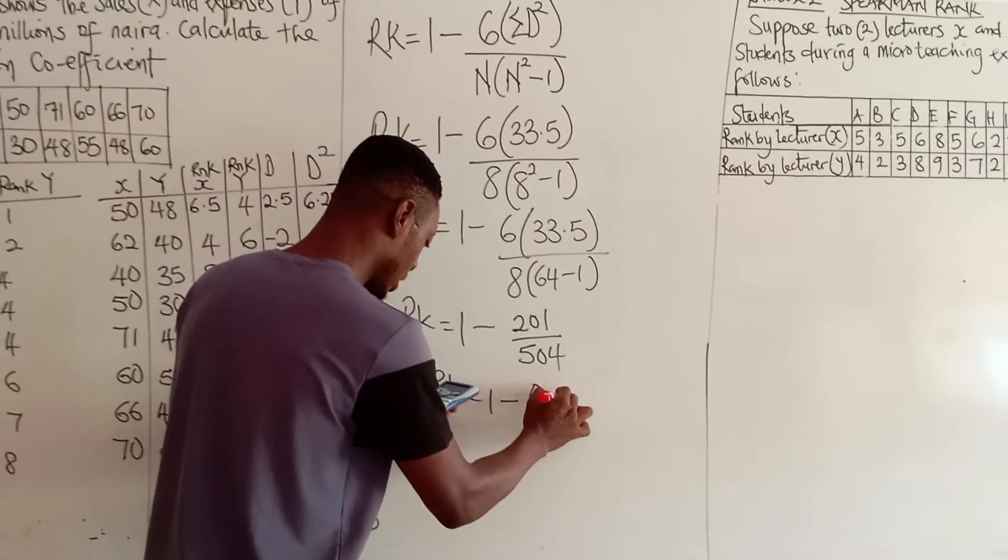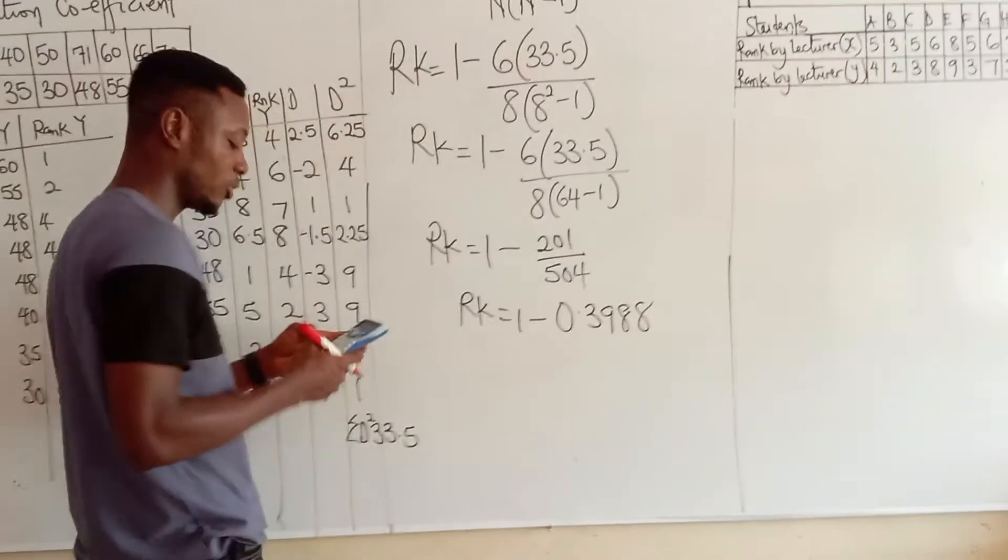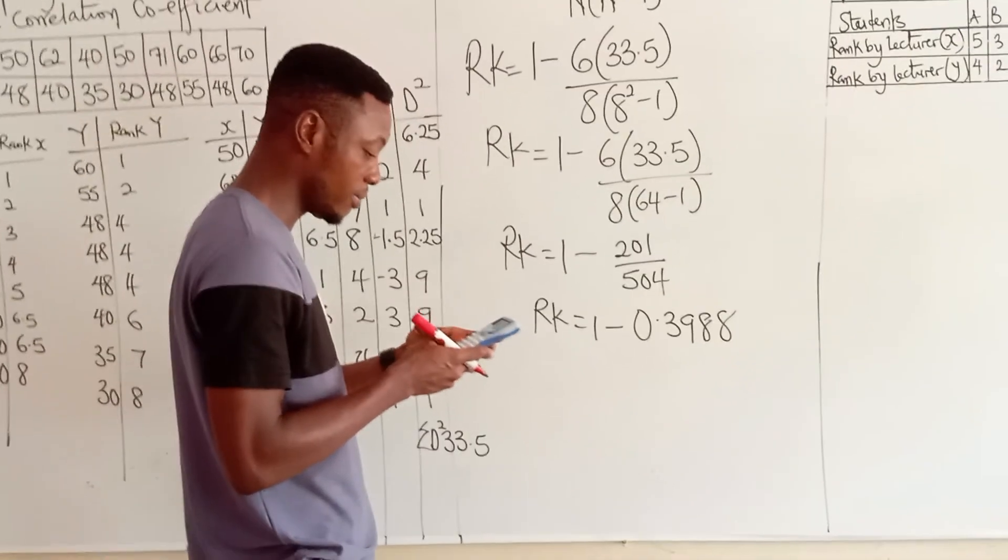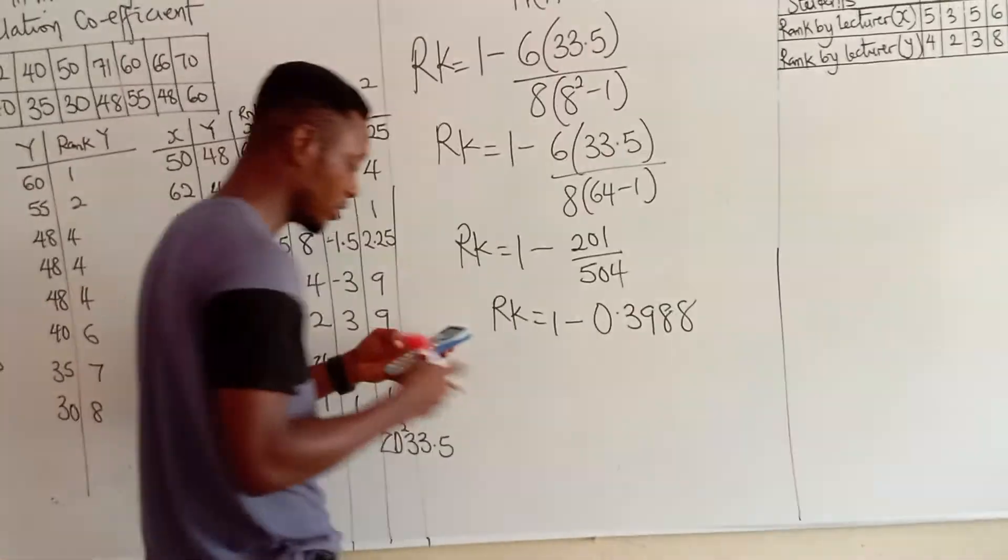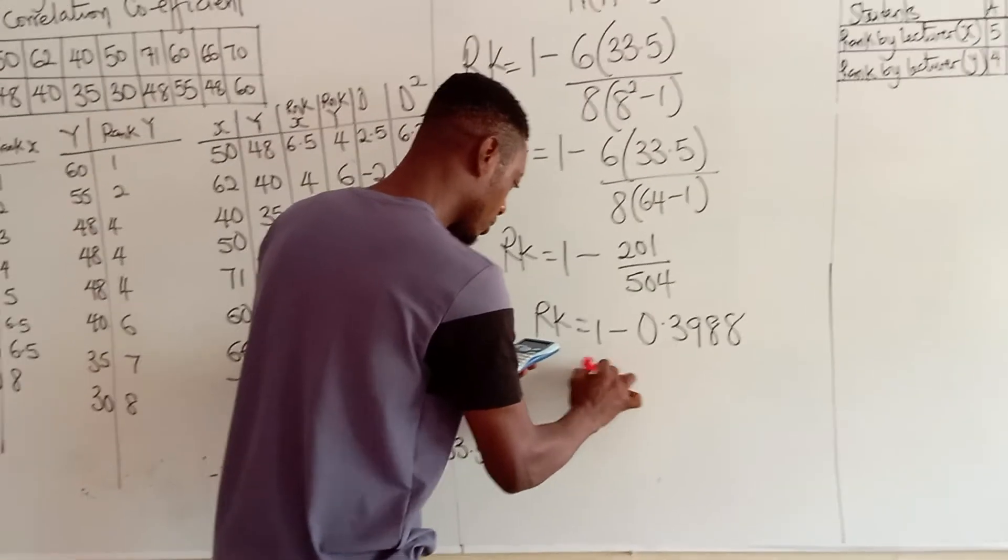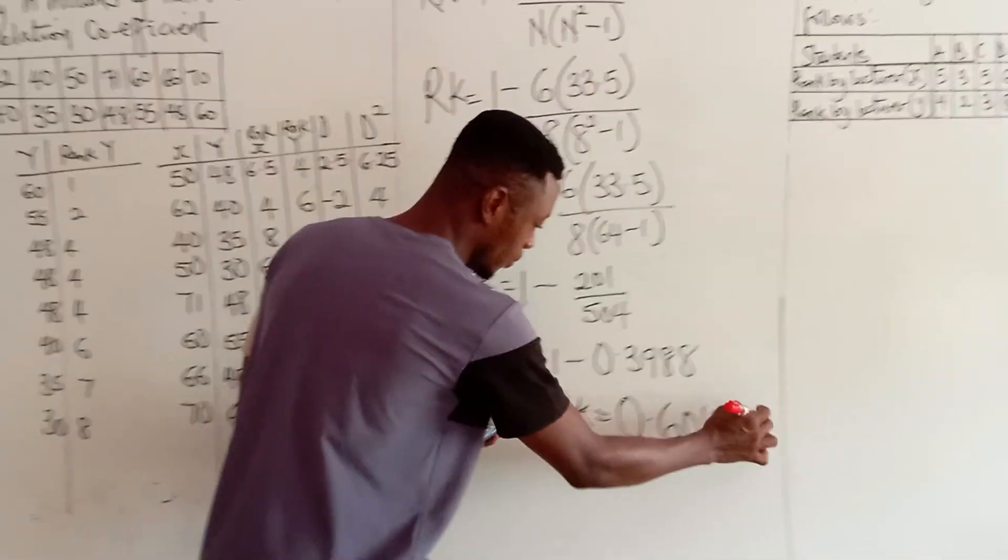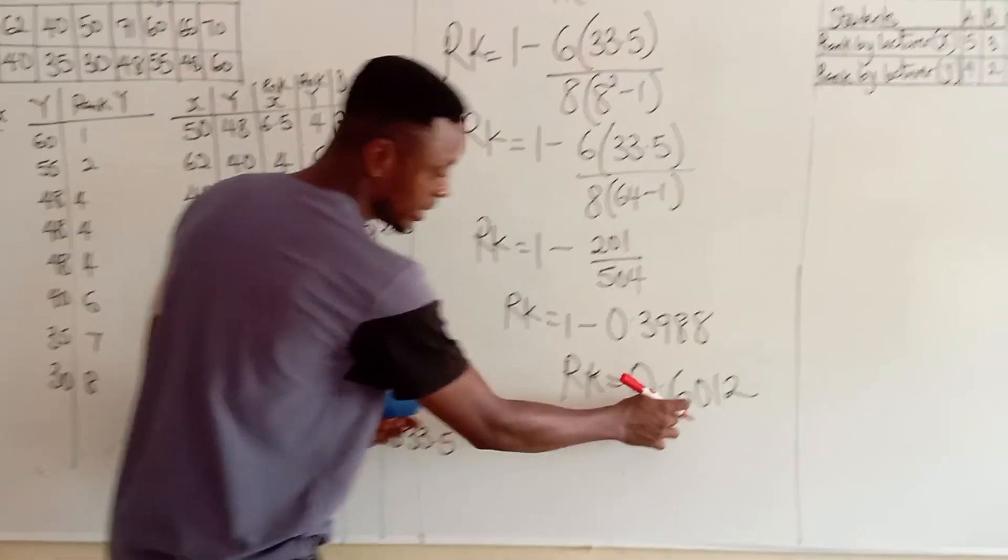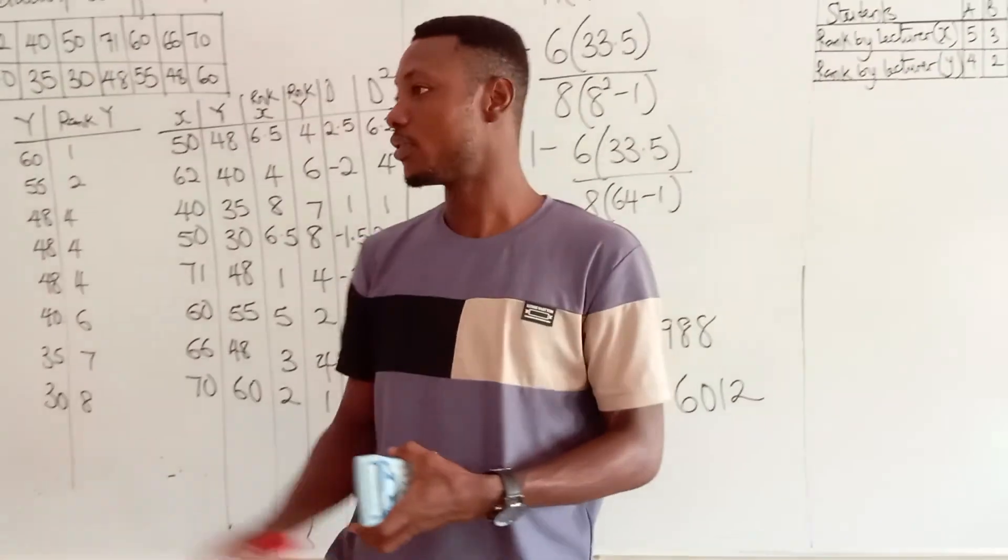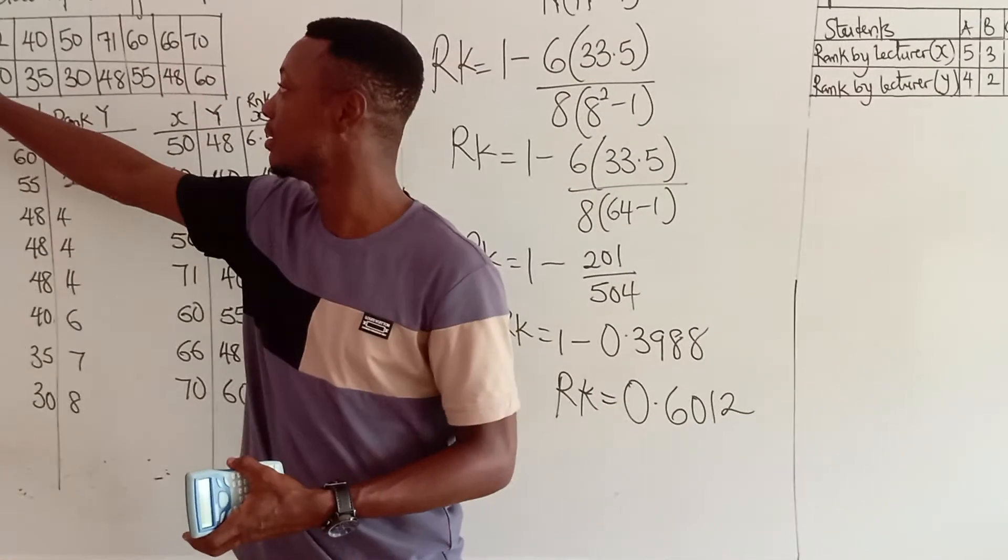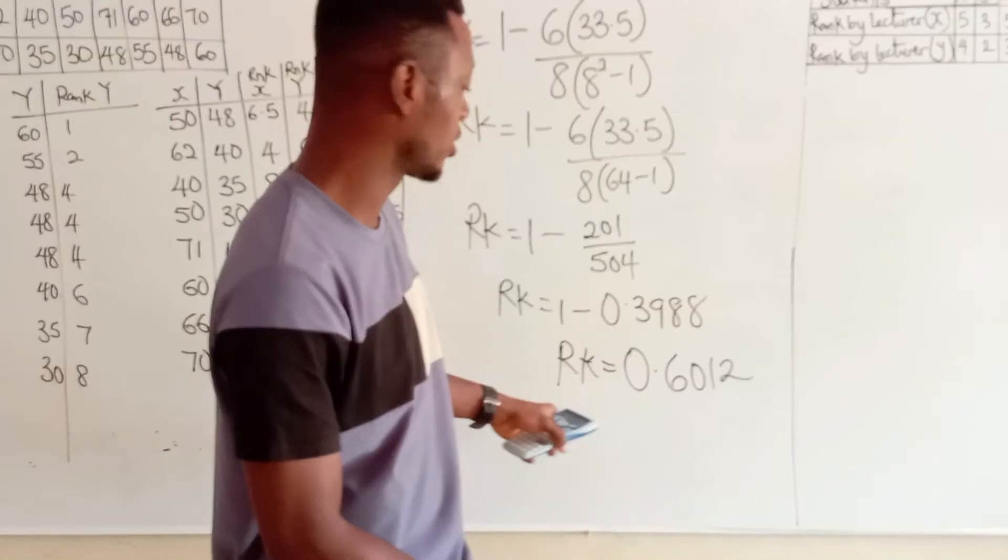Now, if we subtract 1 from that, we have 1 minus 0.3988, gives us rank is 0.6012, which is, if you approximate, this will give you 1, meaning that it has a positive correlation. So, from this, the correlation between the sales and the expenses is a positive correlation because it goes to 1. Now, any figure that is less than 1 is a negative correlation.